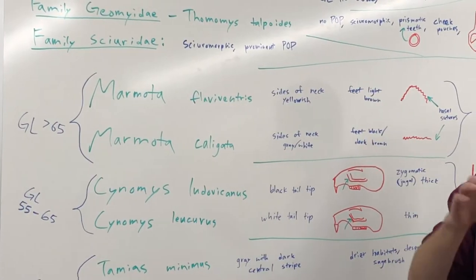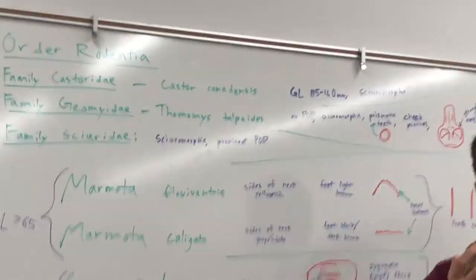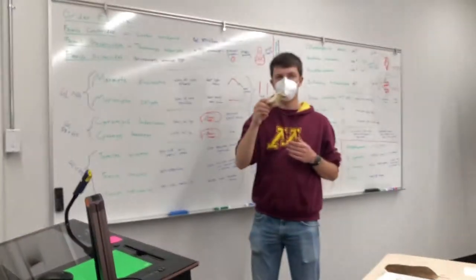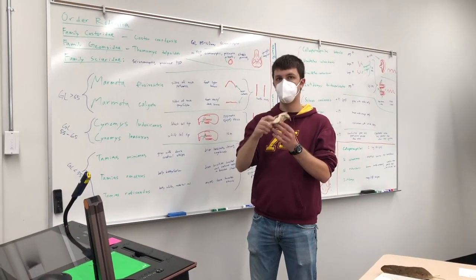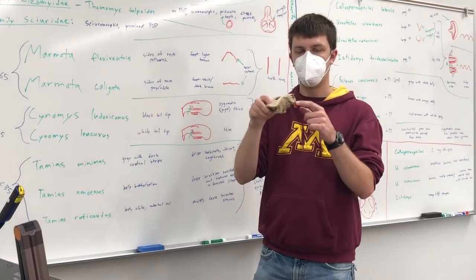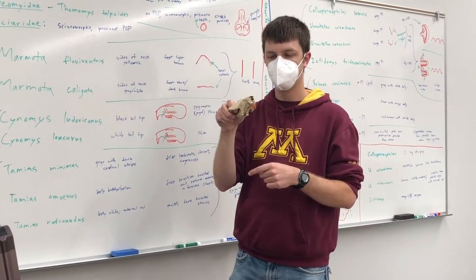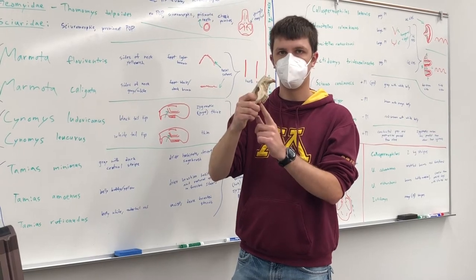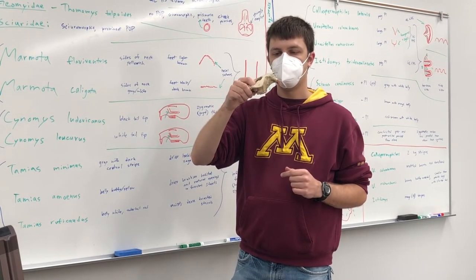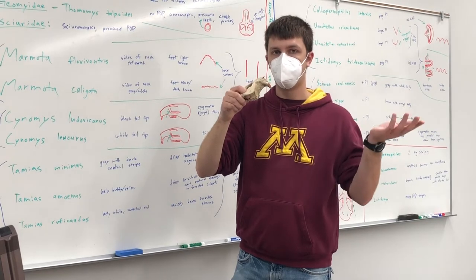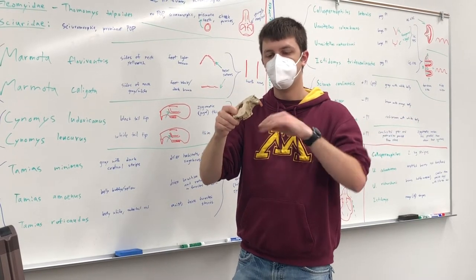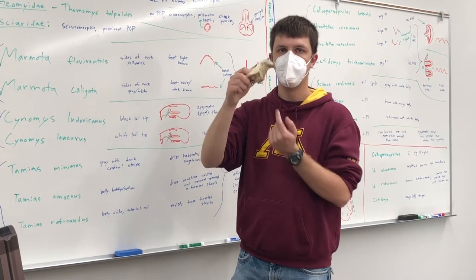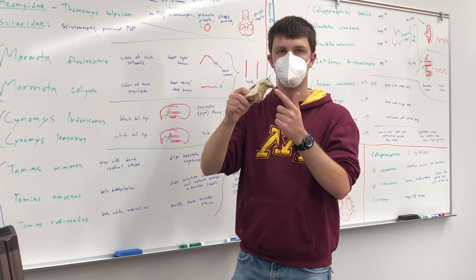The first family we have is family Castoridae — the beaver. This is the largest rodent skull we have. You can tell it's a rodent skull because it has these two big incisors, a diastema, and then the cheek teeth. This is different than rabbits and pikas, which we'll look at later, which have two pairs of incisors — a second pair hidden behind the first. But these rodents have just two basic pairs.